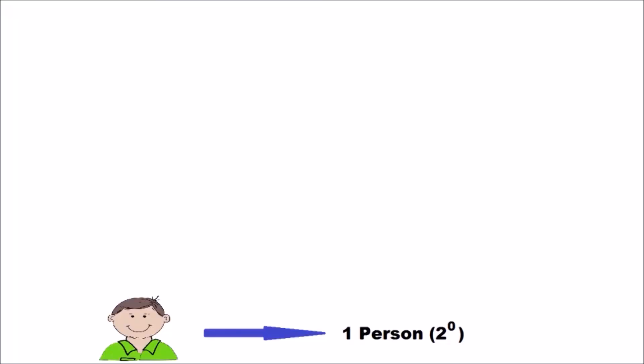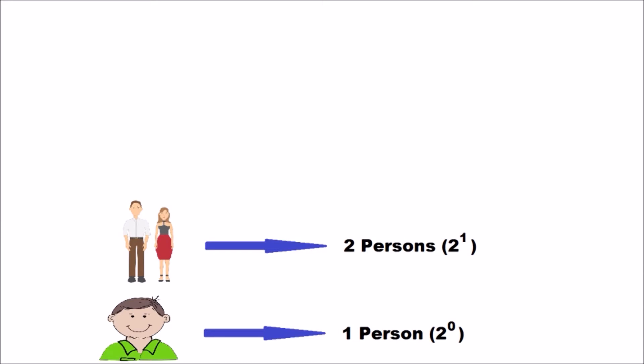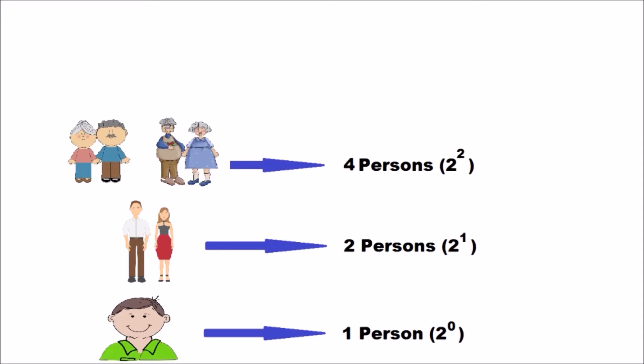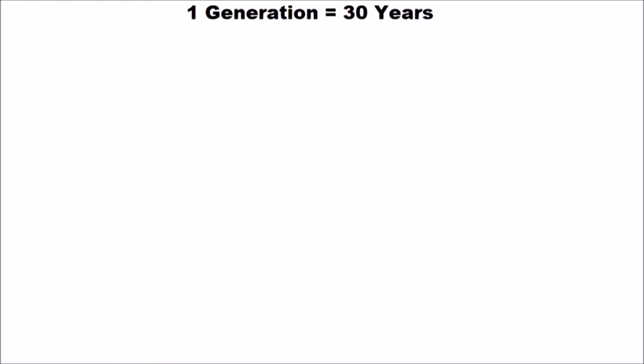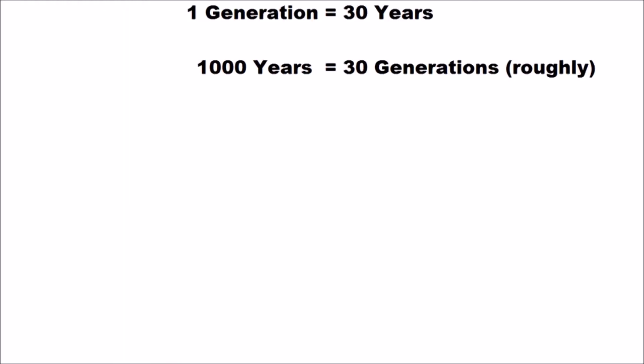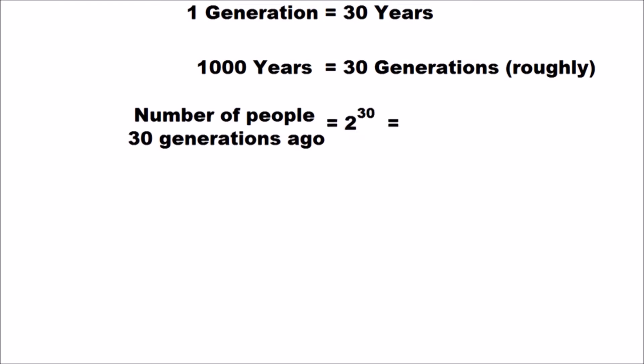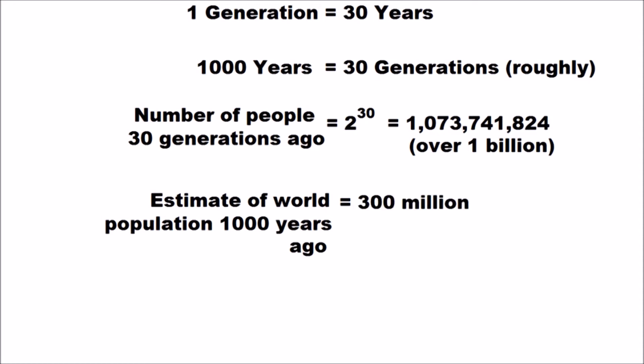Let's do some calculations. Assume you are the first generation and you have two parents. In a random mating model where two people can mate randomly per generation, your parents' parents combined will be four people, and their parents combined will be eight people, and so on. If generations are discrete and non-overlapping, then n generations back there will be 2 raised to the power n people. Assuming a generation is at most thirty years, then a thousand years — roughly thirty generations ago — there would be 2 to the power of 30, or over one billion people in the world. However, we know that this is not the case. Historians have put the world population at that time to be around 300 million.